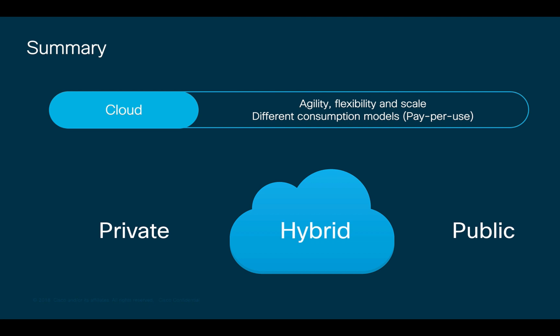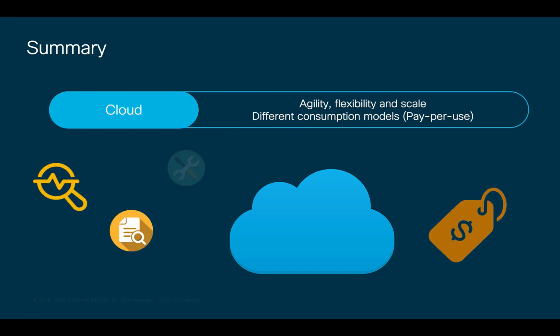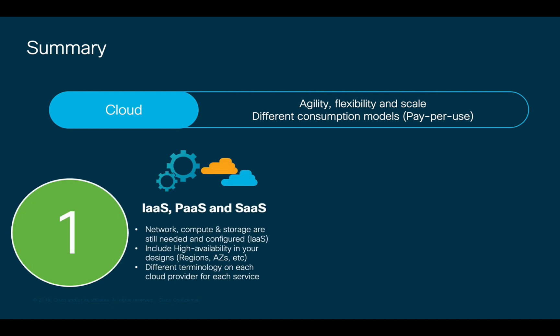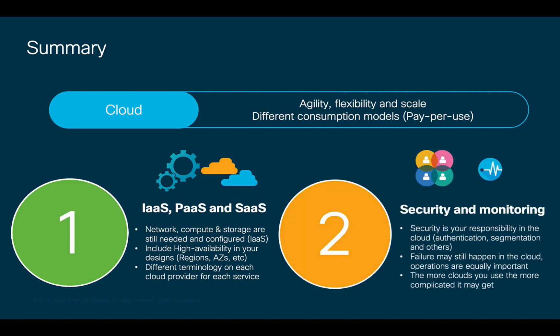As a summary, cloud is here to stay. Adopting a cloud operation model — whether public, private, or hybrid — allows organizations to increase agility, flexibility, and scale. However, it brings multiple challenges in terms of different terms and toolsets for each cloud, which may reduce the ability to provision and manage services consistently. IaaS, PaaS, and SaaS provide great benefits and cloud-native services can accelerate innovation. It is extremely important to include security, high availability, and monitoring as part of your cloud design.